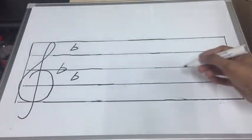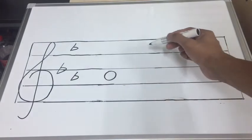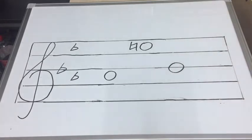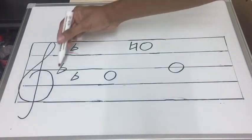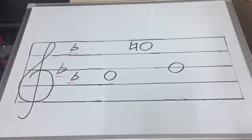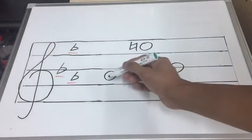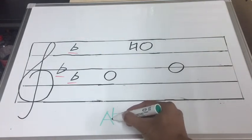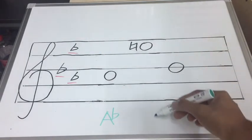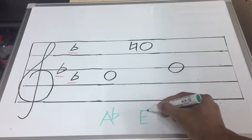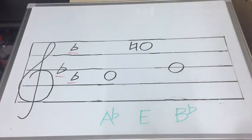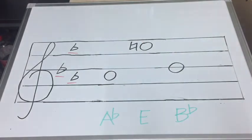Let's try this one. You see, there is already a key signature. So, what is the pitch of the first note? Very good! It is A-Flat. What about the second note? With the natural sign, it is E. The last note is E-Flat.